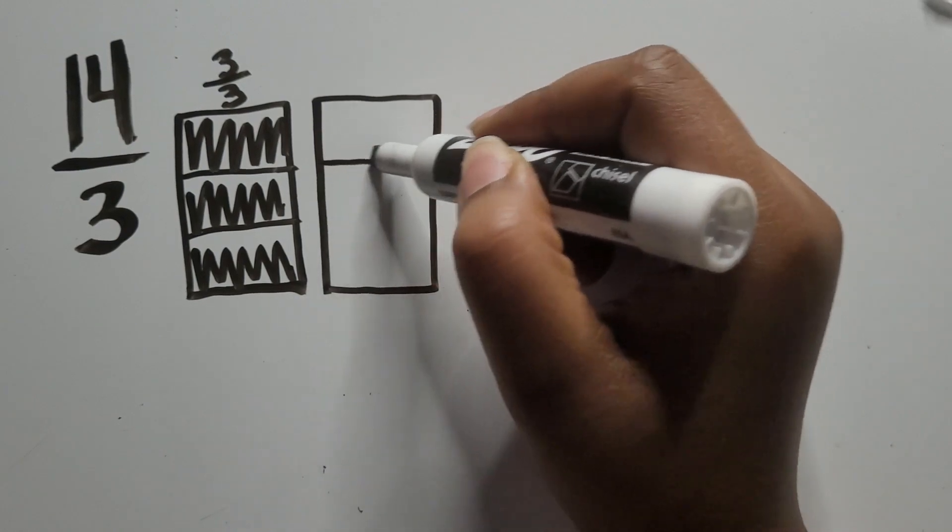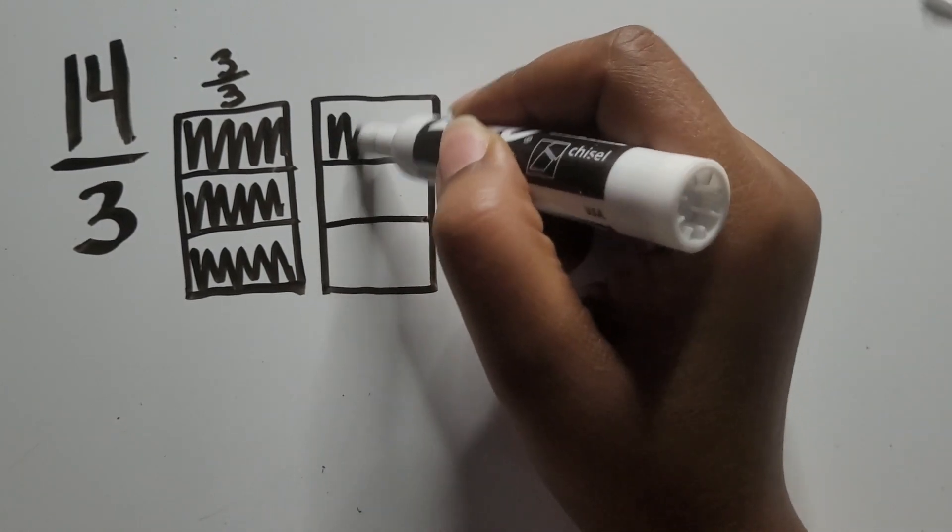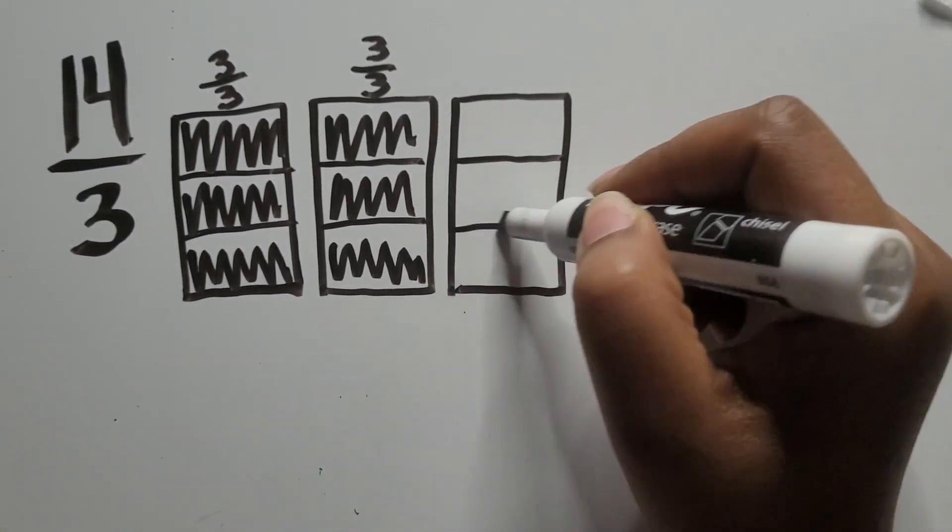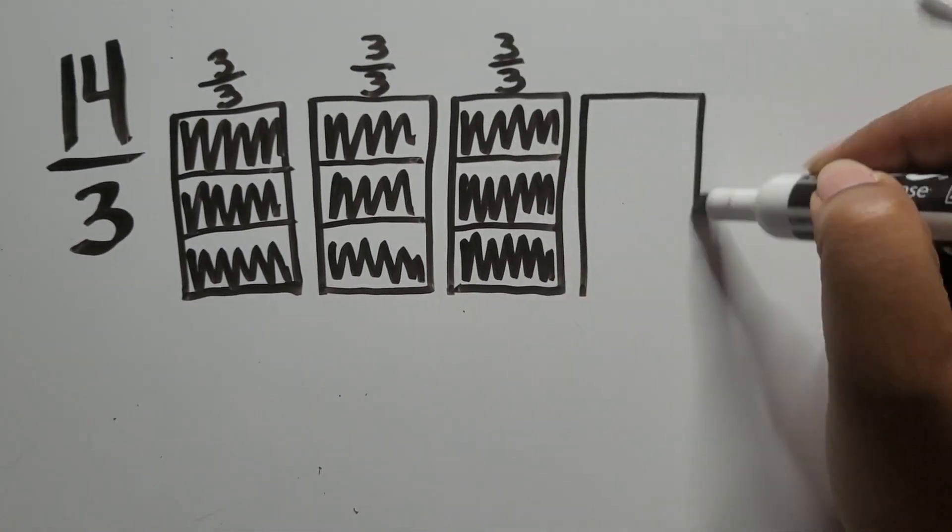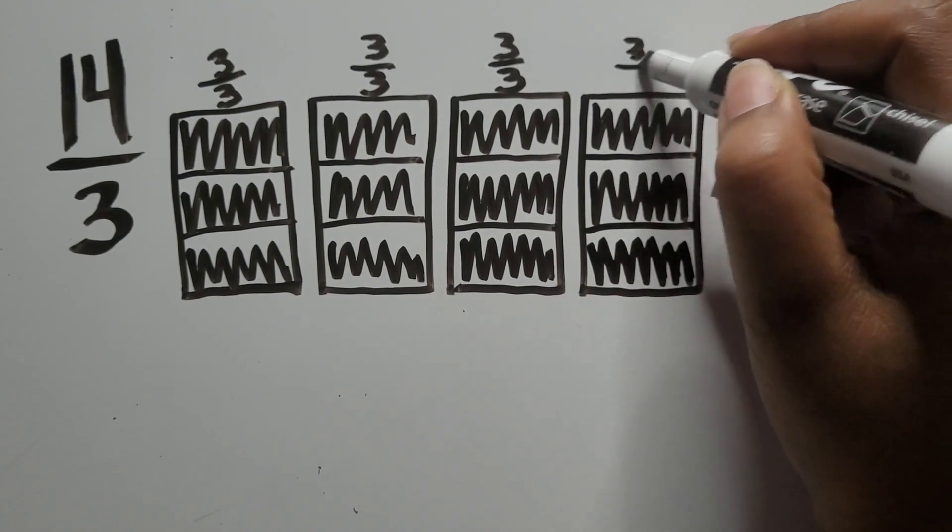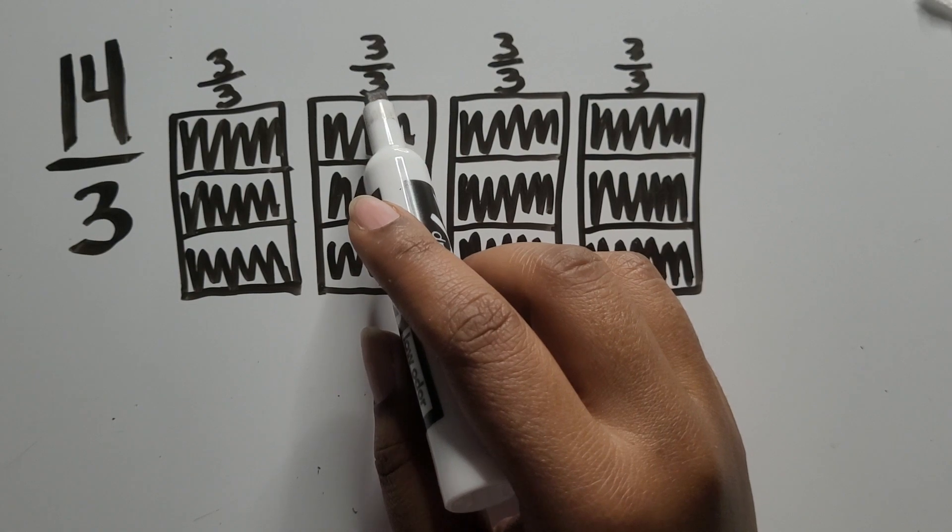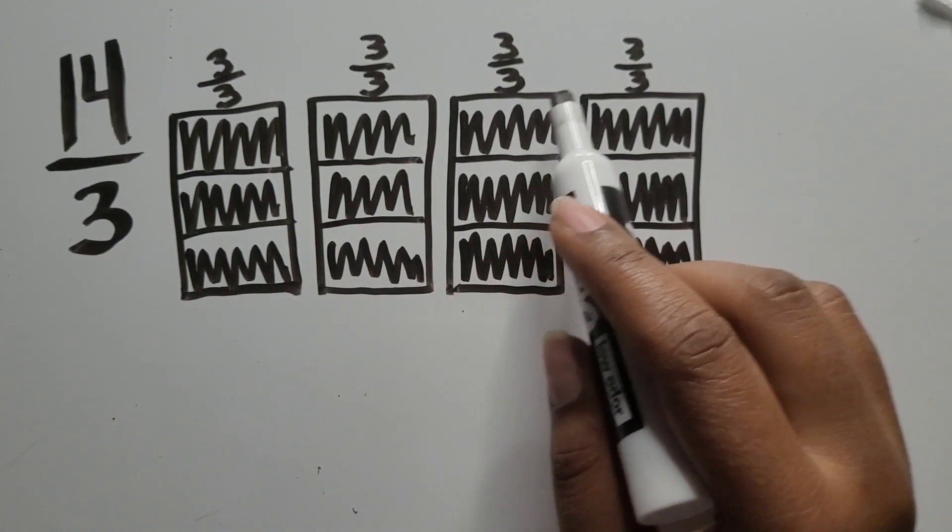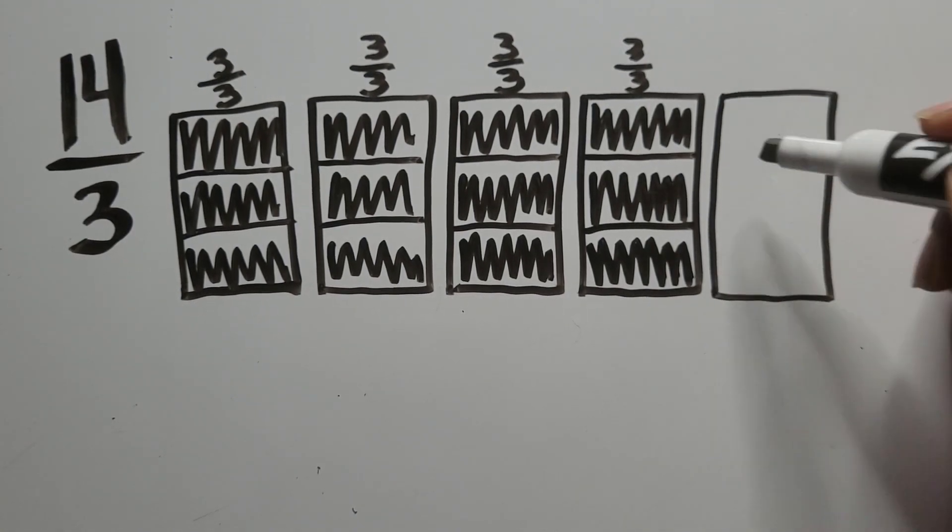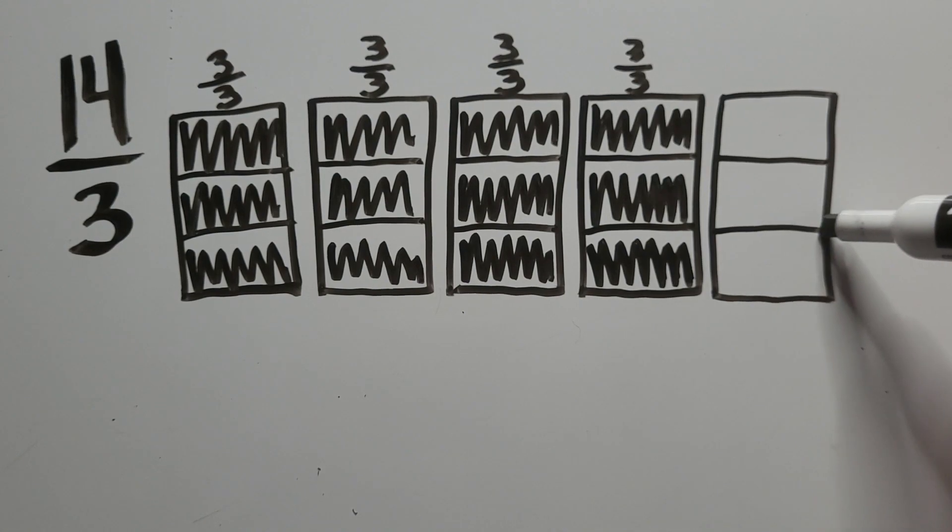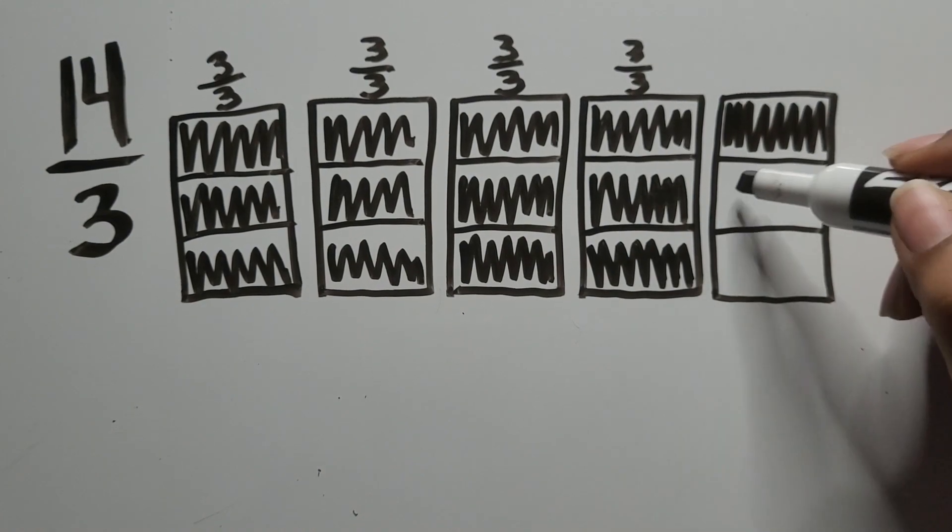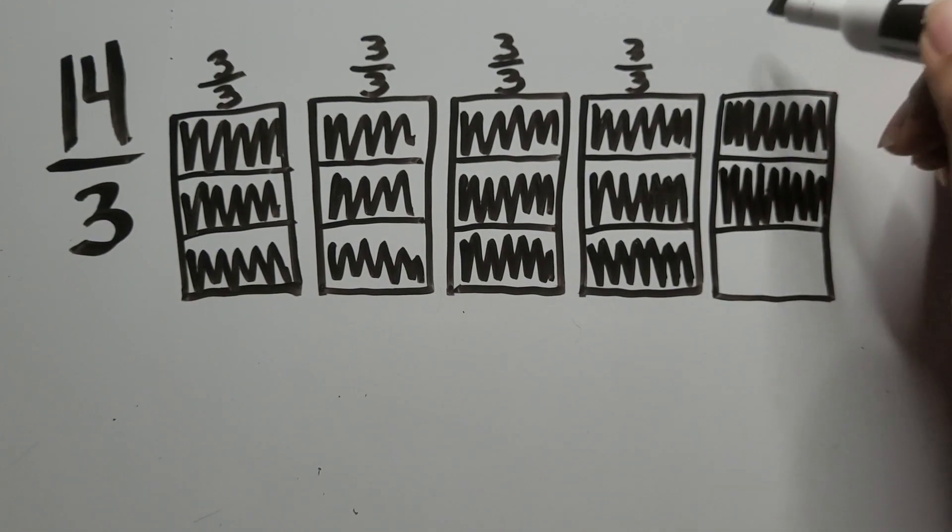Let's repeat what we just did to show a total of 14 thirds. So far we have four groups of three thirds. Three thirds and three more six thirds, three more nine thirds, and three more is twelve thirds. We'll have to draw an extra whole to get to 14 total thirds. But we'll only shade in two of the thirds because we don't need all three to get to 14 thirds.